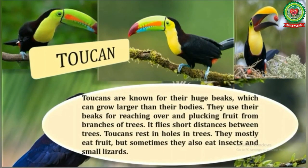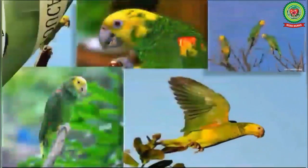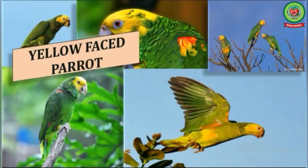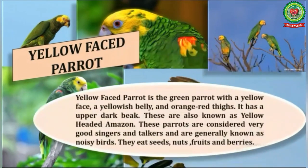Number two is Toucan. Toucans are known for their huge beaks, which can grow larger than their bodies. They use their beaks for reaching over and plucking fruit from branches of trees. Toucans fly short distances between trees and rest in holes in trees. They mostly eat fruit, but sometimes also eat insects and small lizards.